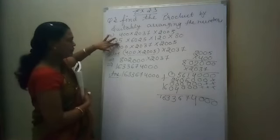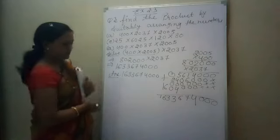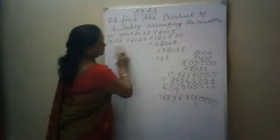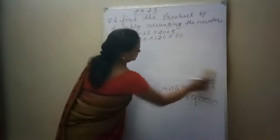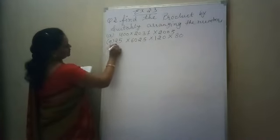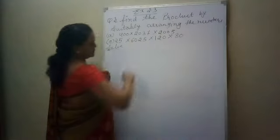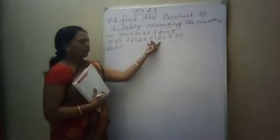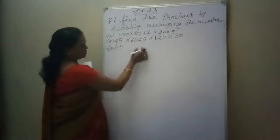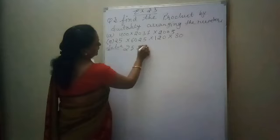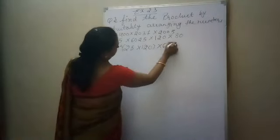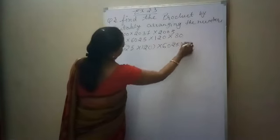In the E part there are 4 numbers. When we do E part, there are 1, 2, 3 and 4 numbers. So here in E part you can make pairs of 2 numbers, then step by step do the solutions. So here: 25 multiplied by 120, then 625 multiplied by 80.